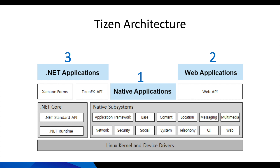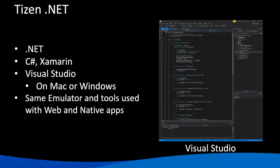The third option, which is the newest addition to the Tizen family, is .NET applications, and that's going to be the focus of the rest of the video. .NET is a software framework developed by Microsoft that usually runs primarily on Microsoft Windows. The language we are going to be using is C# and that's going to be coupled with Xamarin — a company now owned by Microsoft that creates an open source software platform by that name.